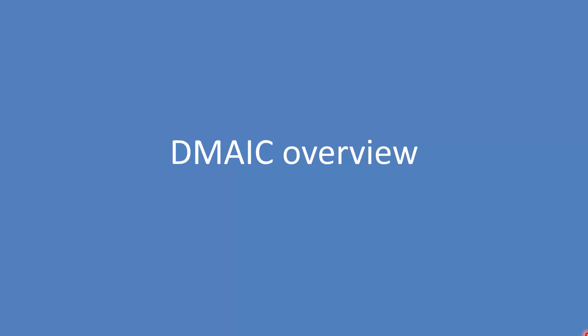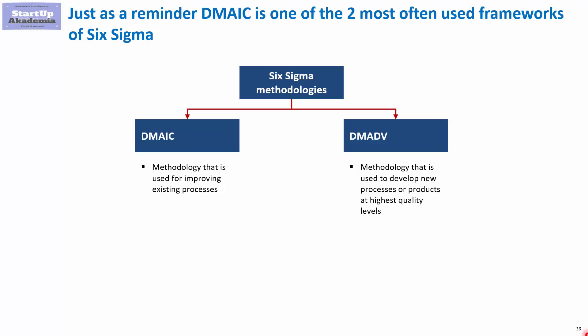Let's do a short overview of the DMAIC framework that we will use in this course. Later on we'll go into more details on each and every stage. DMAIC is one of the two most often used frameworks of Six Sigma, and we use it to improve existing processes. The DMAIC name comes from the first letters of the five stages that this framework suggests going through.